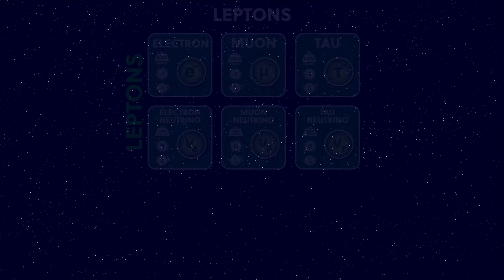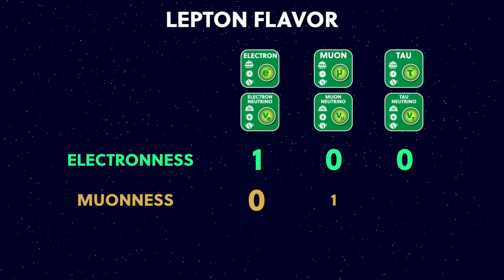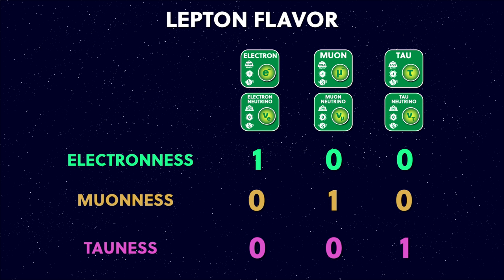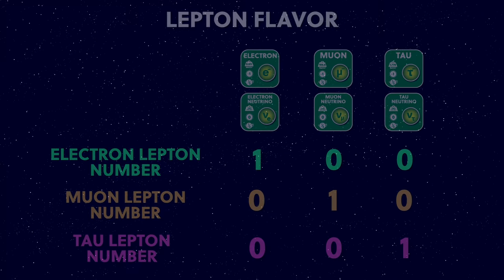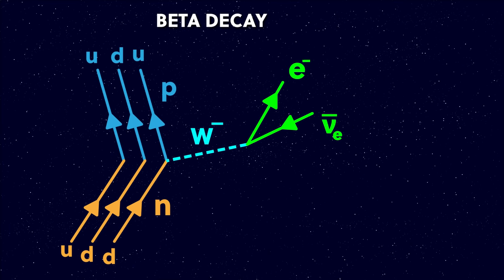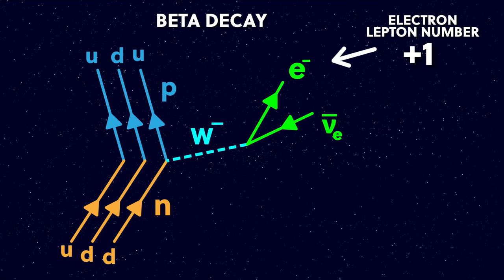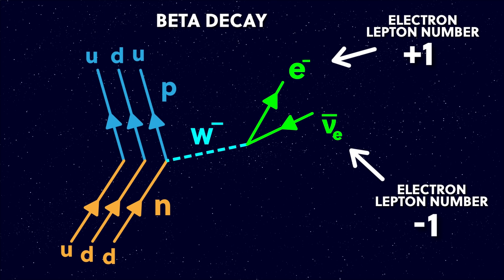There are three kinds of neutrino — an electron neutrino, a muon neutrino and a tau neutrino. These different kinds of lepton each have their own quantum number, which you can think of as electronness, muonness and tau-ness — in physics we actually call them different lepton flavours, and these are another conserved quantum number. We can see this in a Feynman diagram of beta decay, where the W boson decays into an electron and an electron anti-neutrino. The electron has an electron number of plus one, and the electron anti-neutrino has an electron number of minus one because it's an antiparticle. So these two numbers cancel out to zero, and the electron lepton number is conserved.